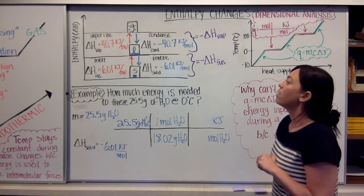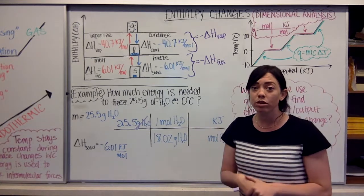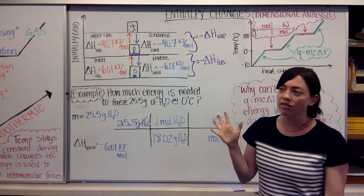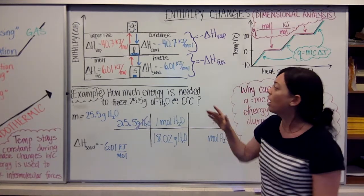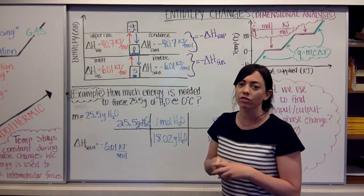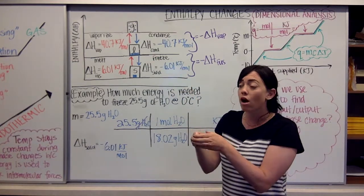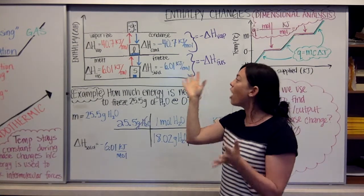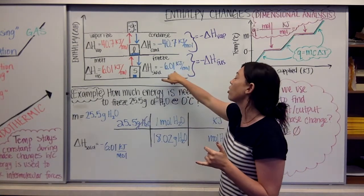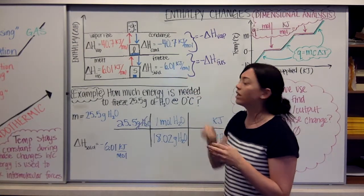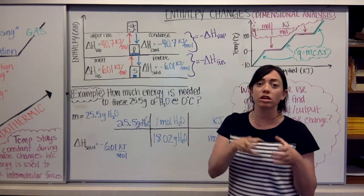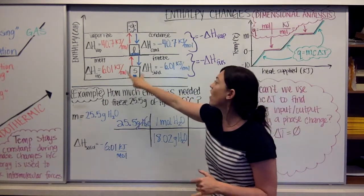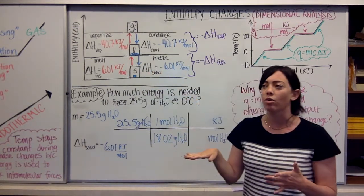That 6.01 kilojoules is going into breaking the intermolecular forces holding our ice cube together into a liquid. Now if we want to go back from a liquid to a solid, we just have to give up that same exact amount of energy. If we put water in the freezer, that water has to give up 6.01 kilojoules per mole in order to solidify back into an ice cube.